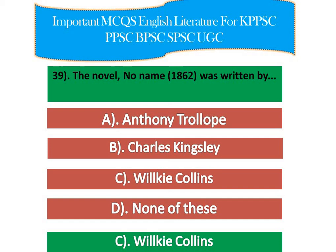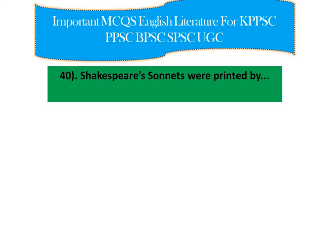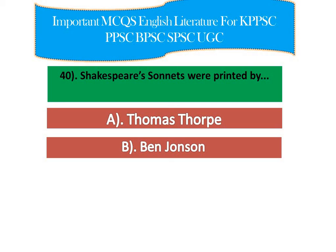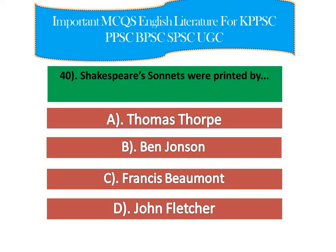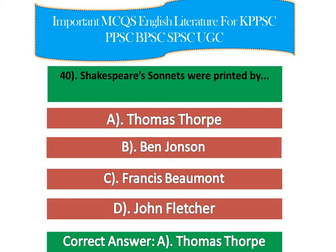The last question: Shakespeare's sonnets were published by — option A: Thomas Thorpe, option B: Ben Jonson, option C: Francis Beaumont, option D: John Fletcher. The right answer is Thomas Thorpe. William Shakespeare wrote 154 sonnets, which were all published together in a quarto in the year 1609, and it was printed by Thomas Thorpe. That's all for today's session.